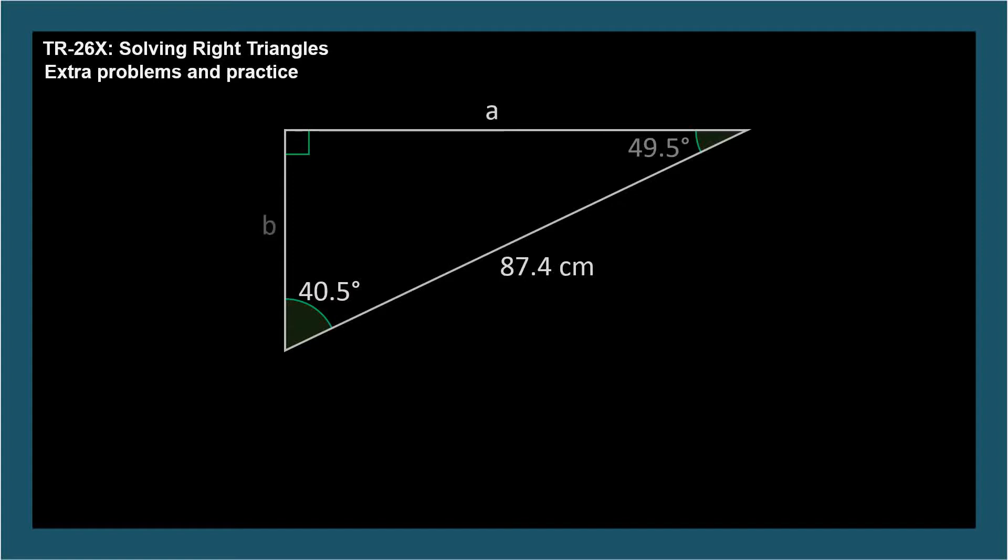Now to find the missing sides, which we can label a and b temporarily. We need to use trig functions involving the given angle 40.5 degrees and the hypotenuse 87.4 centimeters. Sine is opposite over hypotenuse and the side opposite our angle is a. Sine 40.5 degrees equals a divided by 87.4 centimeters.